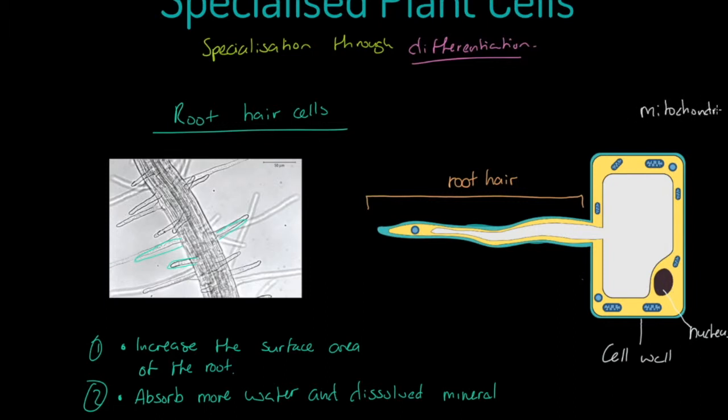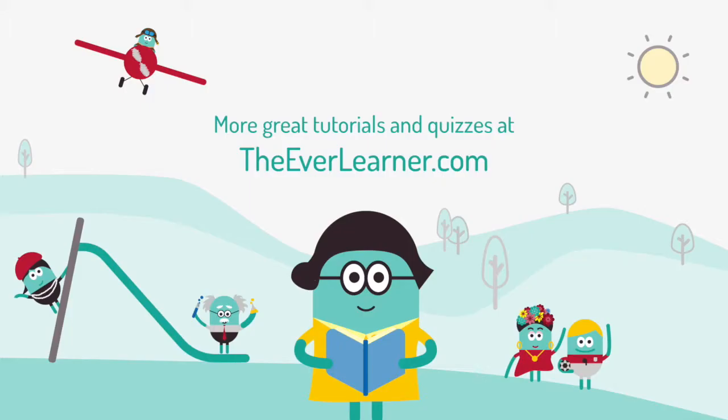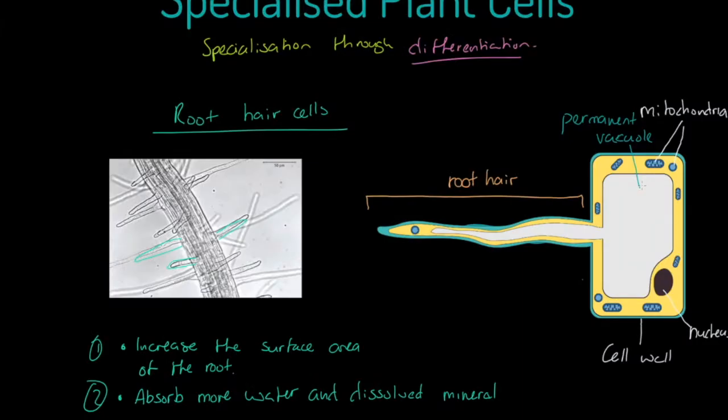We also have mitochondria numerous of them, and we also have in evidence our permanent vacuole. We should mention the cytoplasm as well. Those features are what we'd expect. One thing that is not present, and I encourage you to think why that might be, is we do not have any evidence of chloroplasts.